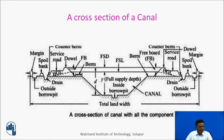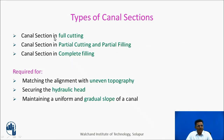A cross section of a canal can be seen here. This is a trapezoidal cross section of a canal with a bund, service road on both sides, a berm for stable slopes, and an outside borrow pit. A canal section can be in full cutting, in partial cutting and partial filling, or in complete filling.